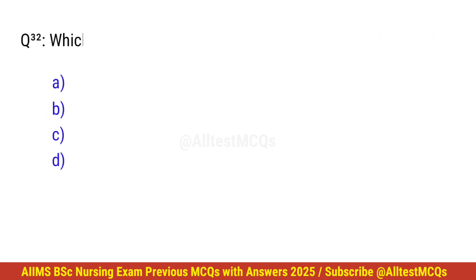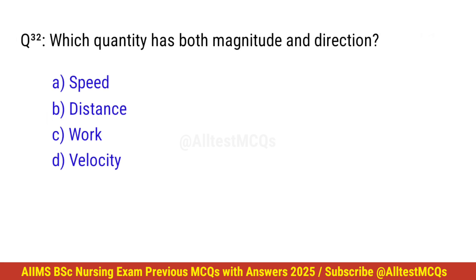Question number 32. Which quantity has both magnitude and direction? Right option is D. Velocity.